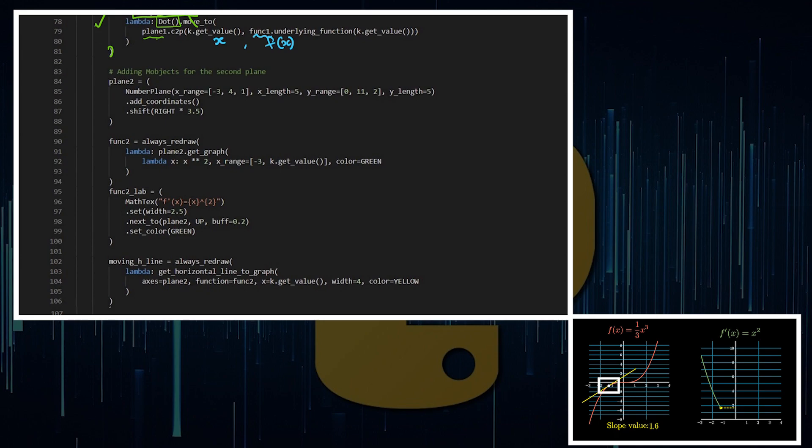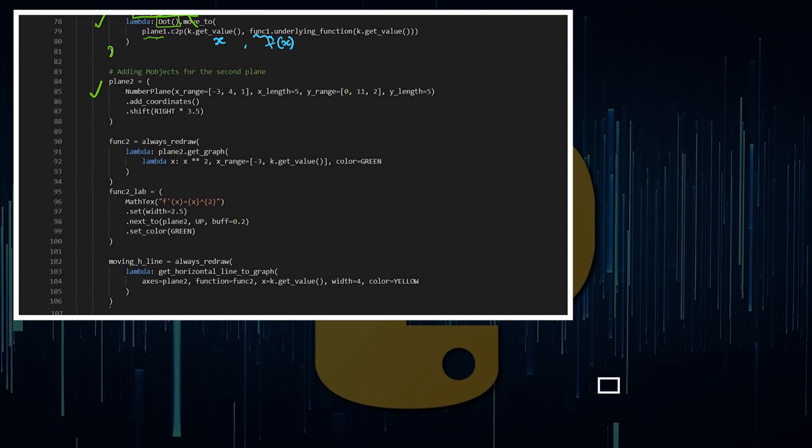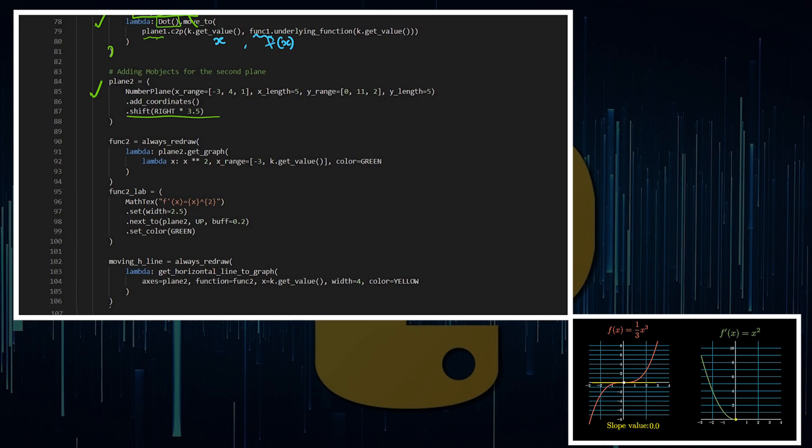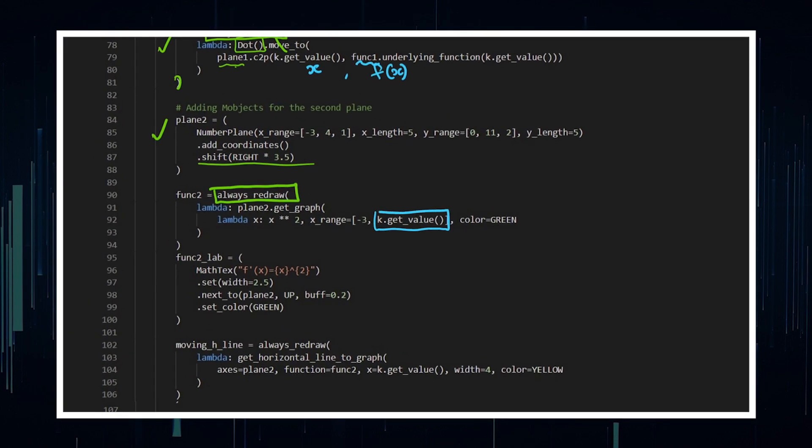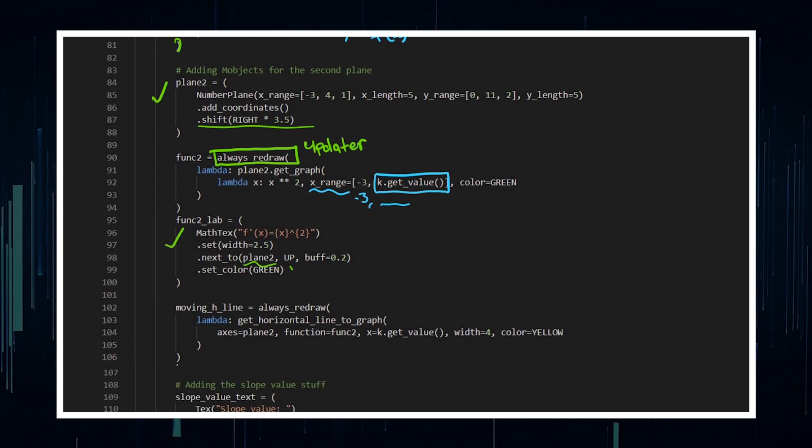Then I move on to the second part of the code where I've got plane two shifted to the right. So one was to the left, one was to the right. Now this function, you can see it's always unfolding. So I've got this always redraw, where this again is reliant on the value tracker for the end of the function. So the range of it goes from negative three to whatever the value tracker is. So as the value tracker is animating as a more positive number than negative three, the function will constantly unfold because this is our updater.